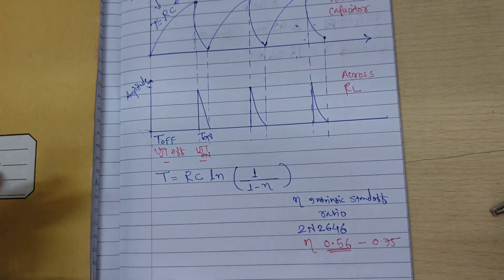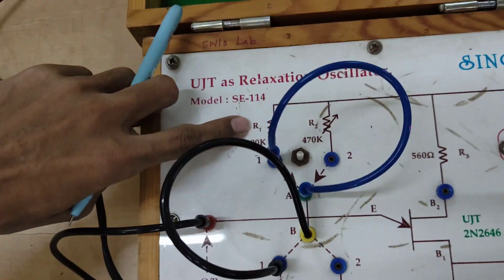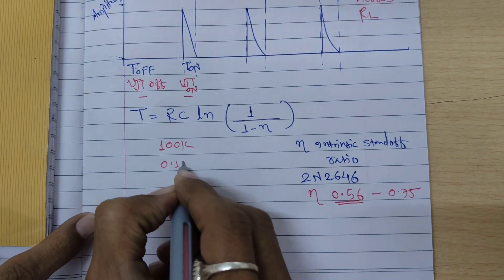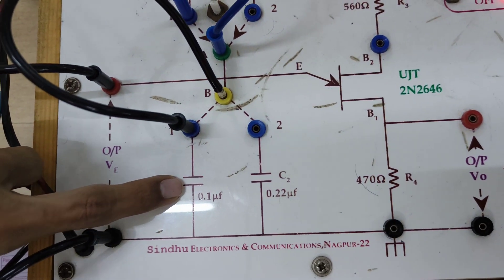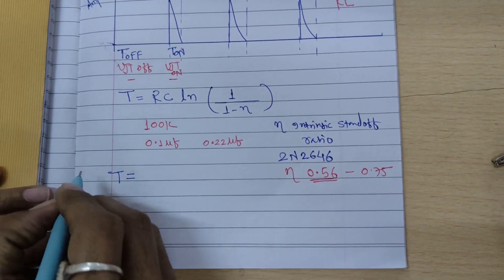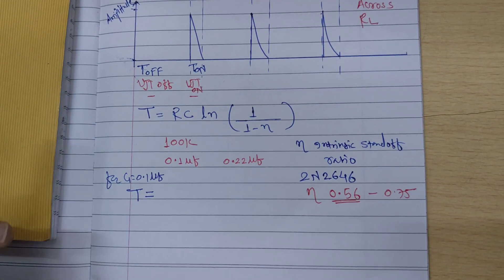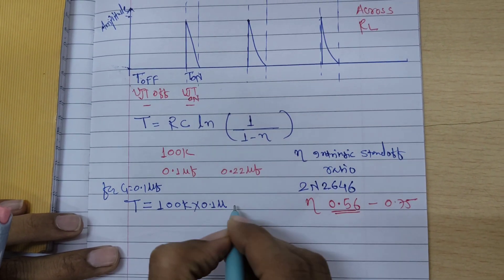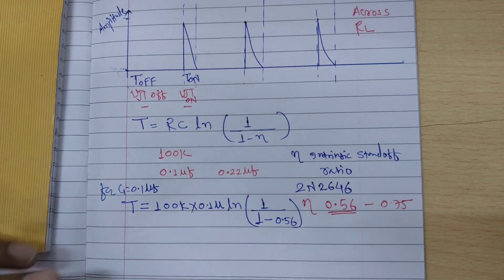We will use η equal to 0.56. For the first case, R is equal to 100 kilo ohm, as you can see on the kit. C is equal to 0.1 micro farad for the first case, and 0.22 micro farad for the second case. I will first calculate the total time for C1 equal to 0.1 micro farad and R equal to 100 kilo ohm. T will be equal to 100K into 0.1 micro times the natural log of 1 upon 1 minus η, using η = 0.56.